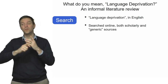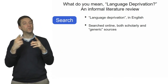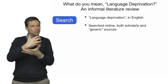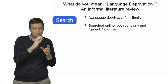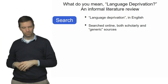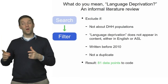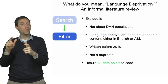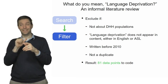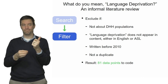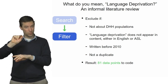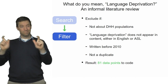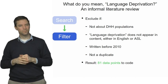First, we looked at materials and articles, posts, essays, and vlogs for anything that used the term language deprivation, searching in English, collecting from academic and non-academic online sources. After gathering that information, we began to filter it: we eliminated items that didn't have to do with deafness, that didn't actually use the term language deprivation, that were written before 2010, or that were duplicates already in our collection. At the end, that left us with 81 observations.